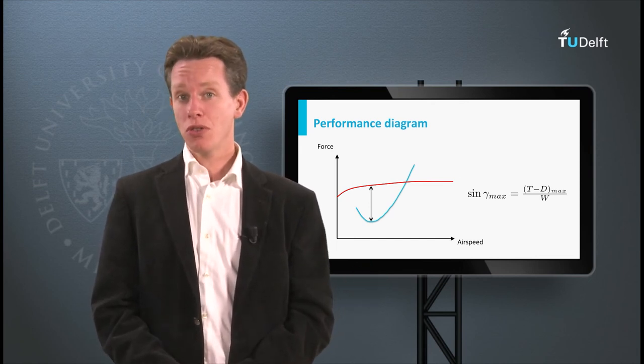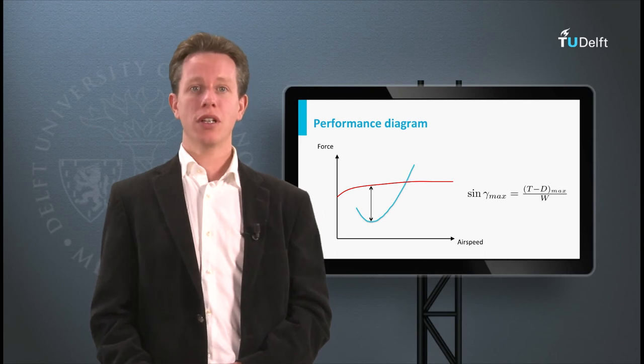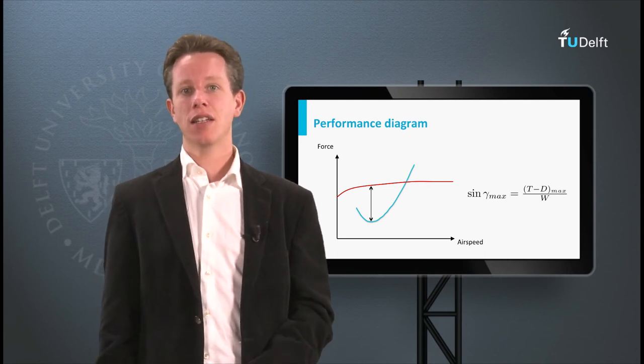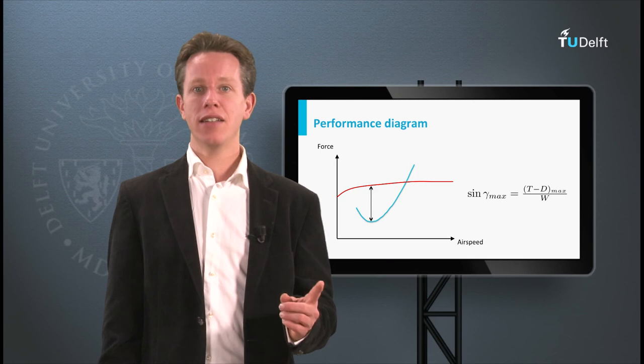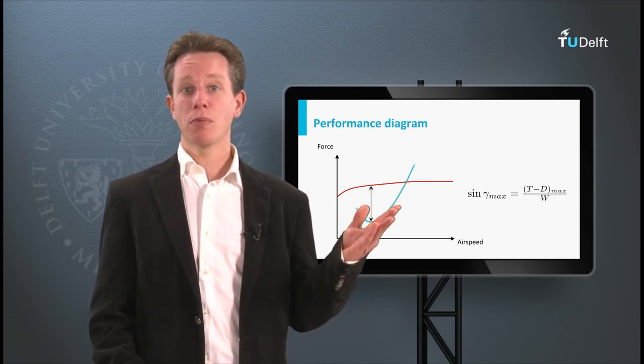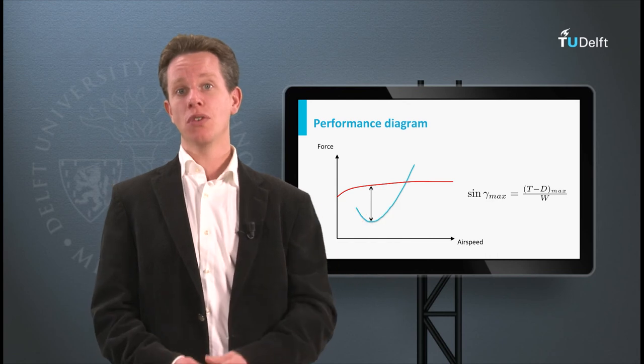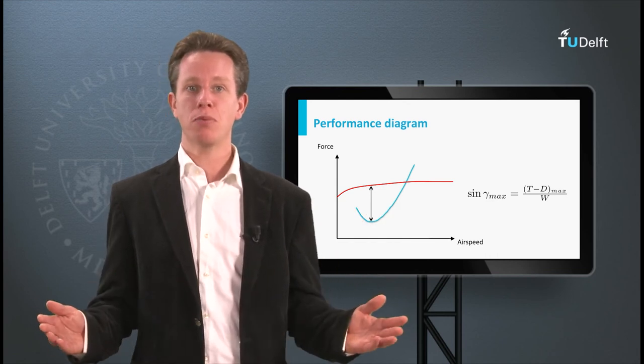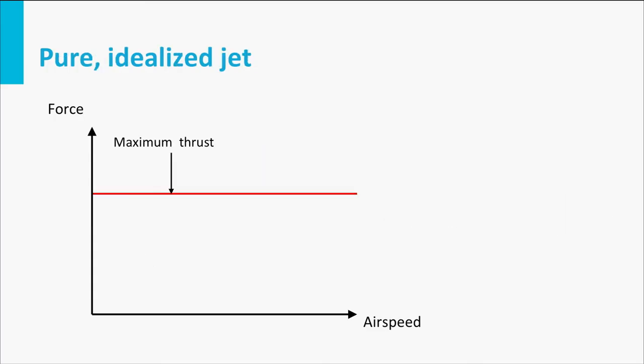there is one special situation where we can also calculate it analytically. That is the case for a pure idealized jet aircraft of which the maximum thrust level of the propulsion system is more or less constant and independent of airspeed. If we also indicate the drag curve in this diagram,